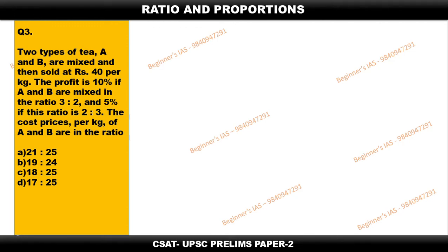Hello aspirants, welcome you all. Let us discuss question number three based on the topic called ratio and proportions. Two types of tea, A and B, are mixed then sold at rupees 40 per kg. The profit is 10 percent if A and B are mixed in the ratio 3:2. The profit is 5 percent if they are mixed in the ratio 2:3.